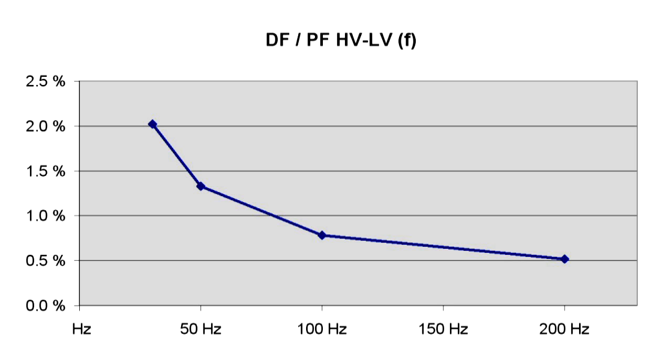The power factor or the dissipation factor at 50 Hz is over 1% and the minimum lies far above 200 Hz. It can be assumed that the insulation contains a relatively large amount of water.